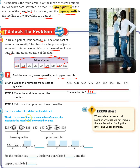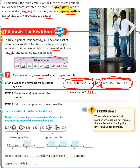Now calculate the upper and lower quartiles by finding the median of each half. This is the lower half of the data. There are two numbers in the middle: 28 and 32. 28 plus 32 is 60, divided by 2 is 30. So the lower quartile is 30.